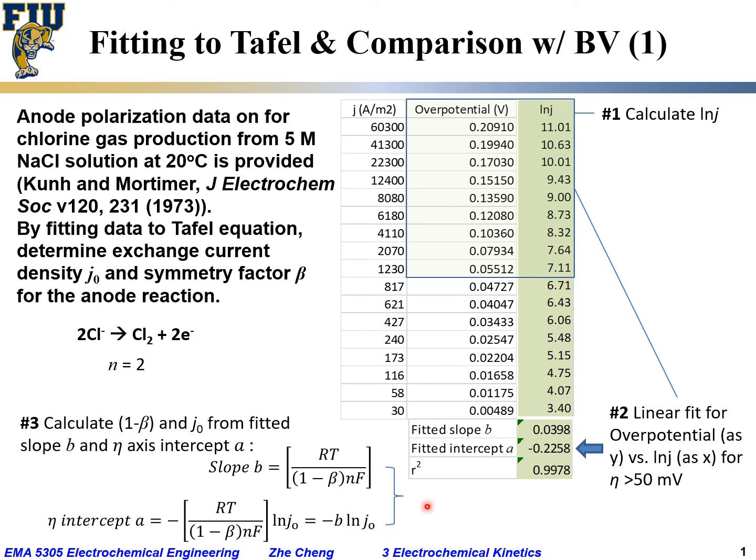So, with the slope, fitted slope B value, with the equation on the top, we can in principle calculate 1 minus beta, because R is gas constant, is known. T, we said is 20 degrees C, or 293.15 Kelvin, is also known. N, here is 2 for the chlorine oxidation, 2 chlorine gas, and F is Faraday constant, which is known. So, with this, we can, with slope B, we can calculate 1 minus beta.